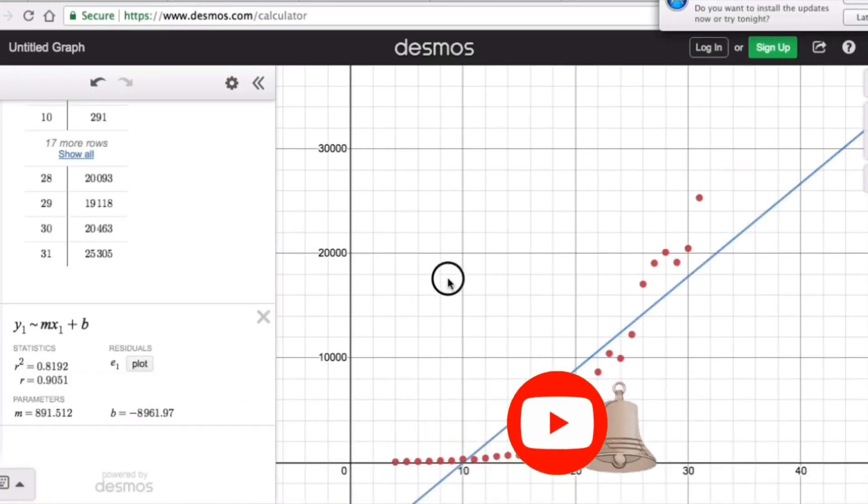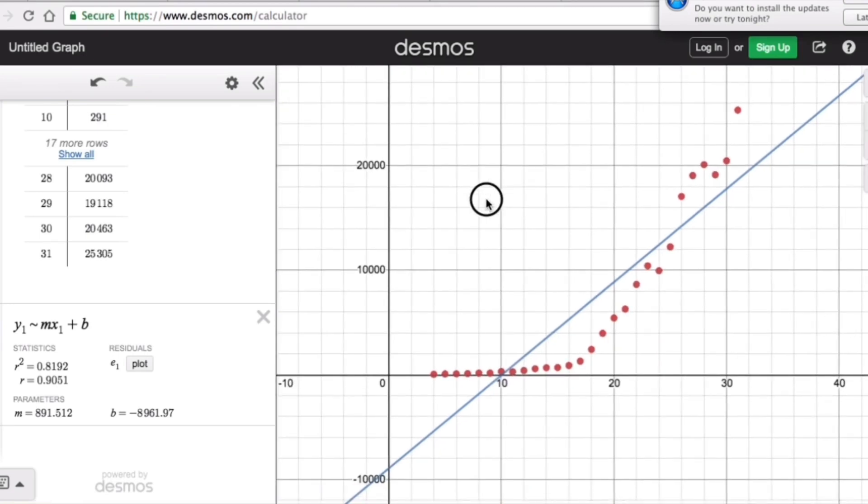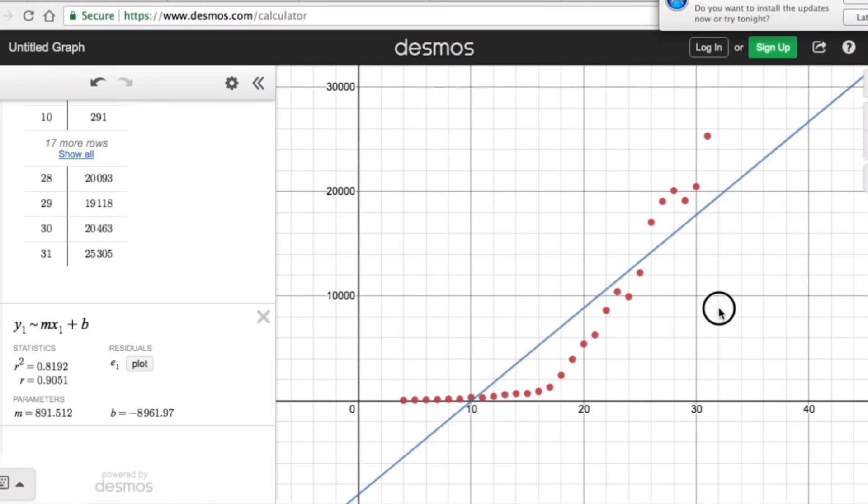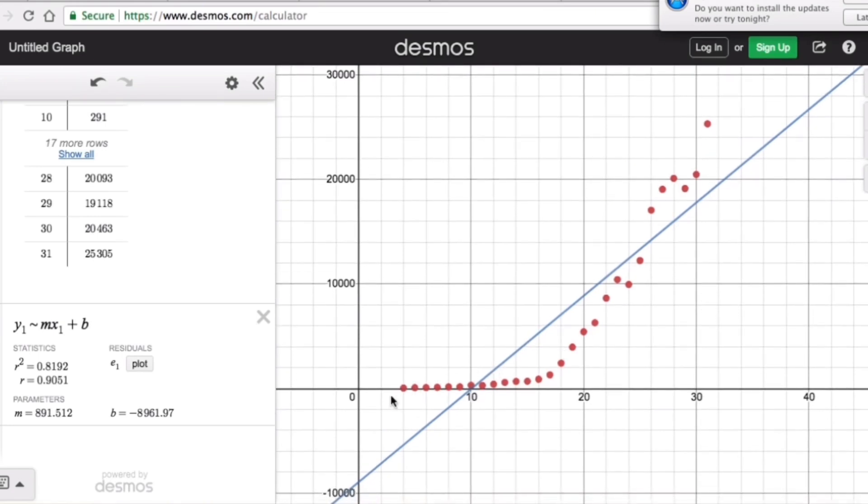So if we look at the graph, the graph doesn't really make sense because the cases did not start on the negative value. So pretty much this is not a good model that would fit this graph. And at the same time, it doesn't really fit because the graph was like a little curvy right here and it's a straight line. So a line is not a fit to this problem.